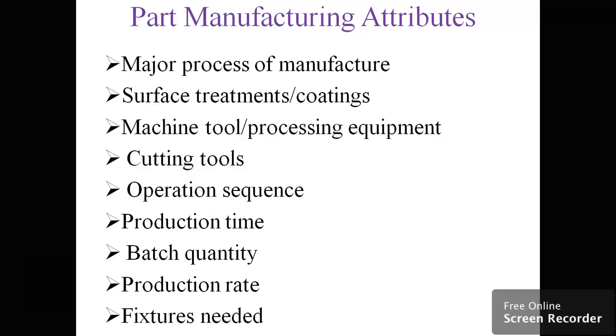Manufacturing attributes also include machine tools that are common for different objects, cutting tools, operation sequences, production time, batch quantity, production rates, and fixtures needed. You need to identify what manufacturing attributes are common for similar parts.